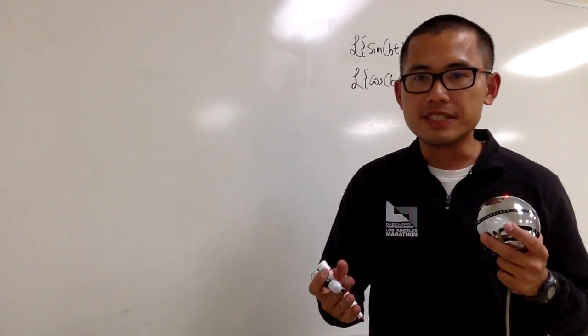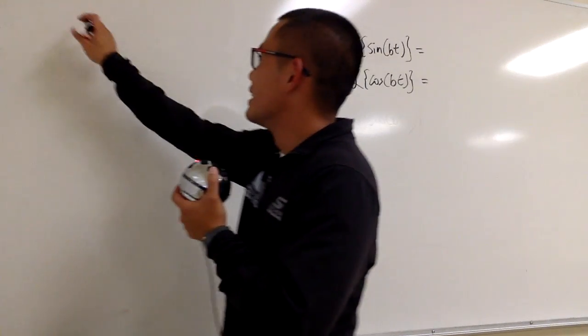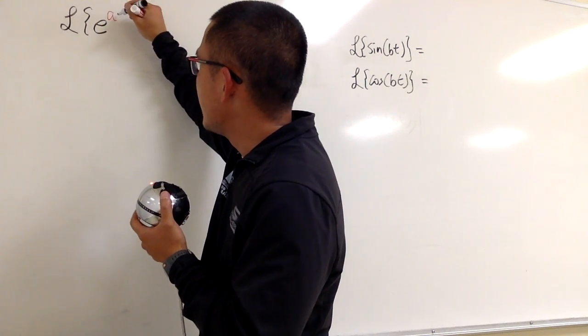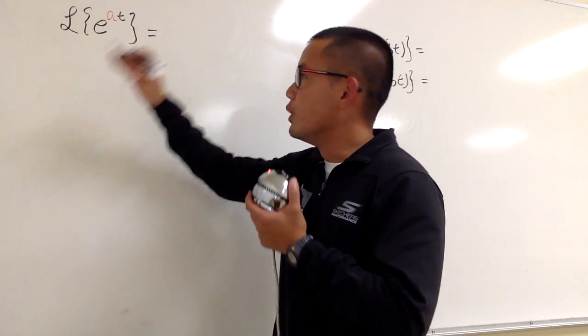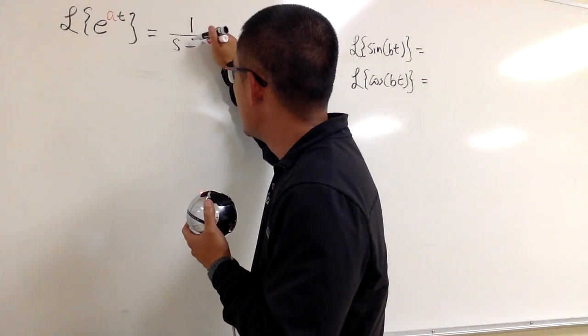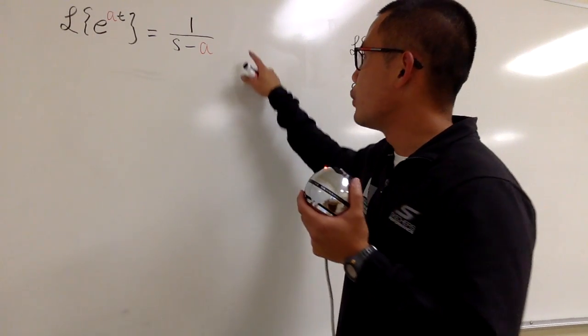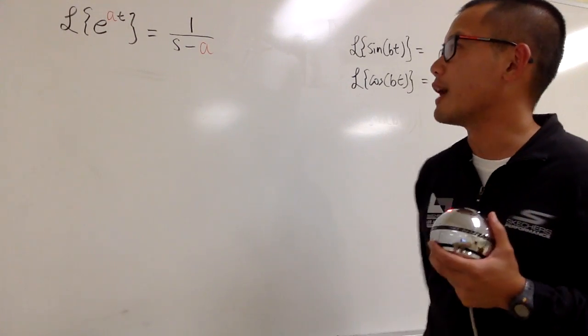As I mentioned in the previous video, the Laplace transform that I like the most is the Laplace transform of the function e to the at. We did this already. We know the answer. This is 1 over s minus a, and a can be any number. We know s has to be greater than a, but let me not worry about that for this video.